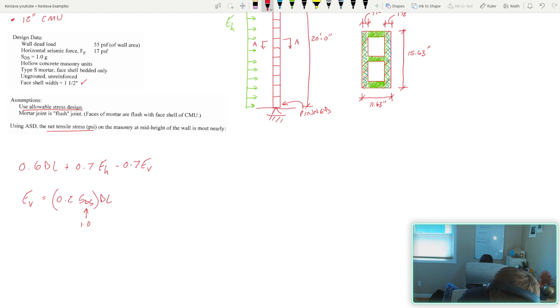And if we solve for that, that turns into 0.2 dead load. So we'll switch positions with that variable. 0.6 dead load minus 0.7 times 0.2 dead load, all that in parentheses, plus 0.7 E sub H. E sub H is our horizontal seismic effects. If we reduce all of that further in the dead load, that gets us 0.46 dead load plus 0.7 E sub H.